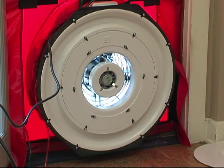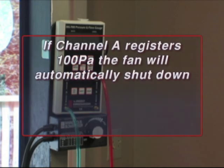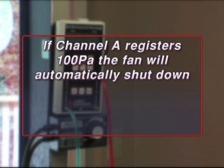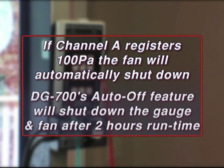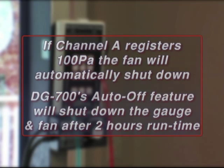The fan will also be stopped while cruising under the following circumstances. If channel A registers a pressure of 100 pascals or more, the fan will automatically be shut down and the gauge will revert back to the cruise setup state. The DG700's AUTO OFF feature will shut down the gauge and turn off the fan after two hours of run time if no buttons are pressed during that time.